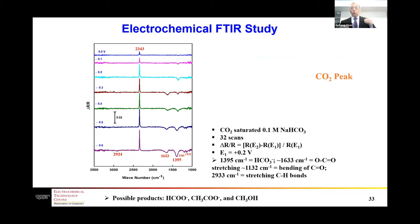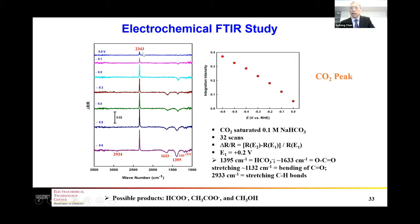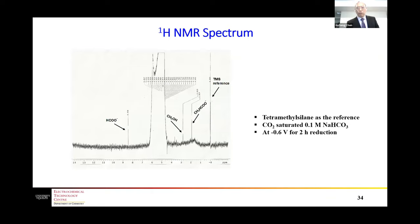Using the in-situ electrochemical FTIR technique to study CO2 reduction on the nanodendrites, increasing the potential from 0 to about minus 600 mV shows increasing CO2 peak intensity, indicating more CO2 is being reduced. We can also identify new products including formate, acetic acid, and methanol, and we performed further NMR analysis to confirm the liquid products.